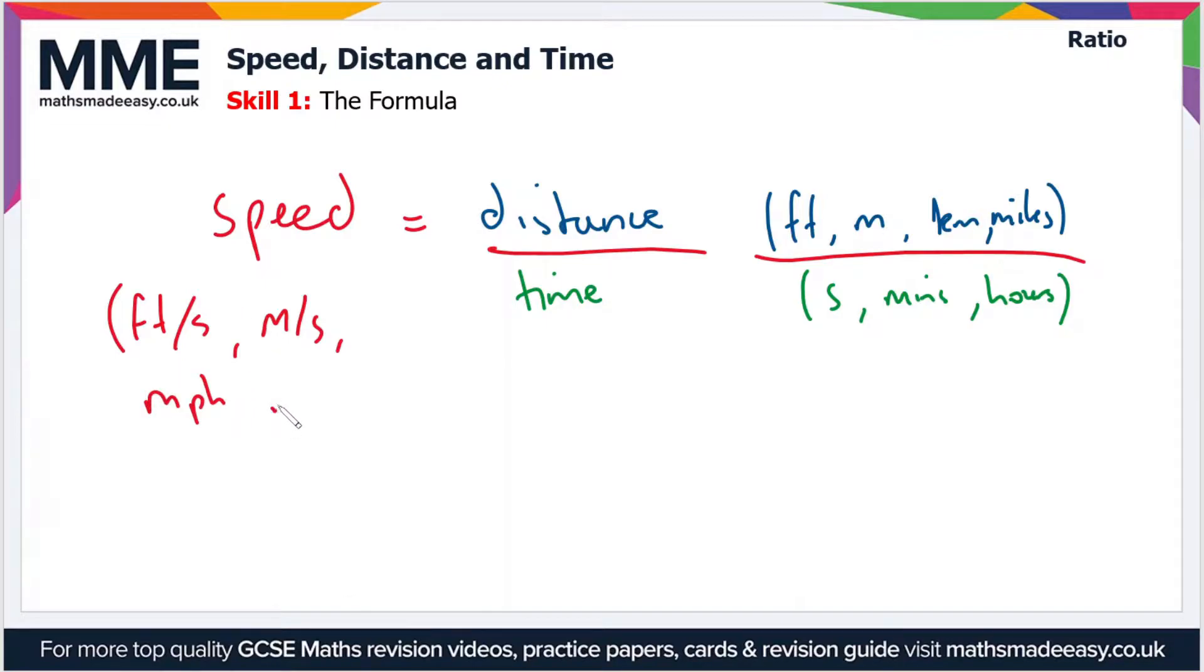Sometimes written MPH, or you could have miles per hour written out like this, same for kilometres, you get kilometres per hour, or KMPH. There's quite a lot of units that you could see for speed, and that's because it's a compound unit, so it's made up of more than one unit.